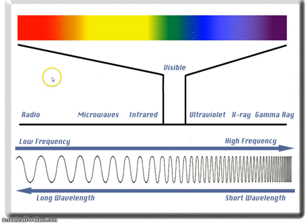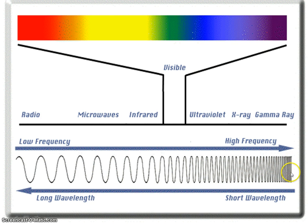Here is the electromagnetic spectrum. You can see this transverse wave at the bottom that shows us the low frequency, long wavelength electromagnetic energy is on the left side of the spectrum, and the high frequency, short wavelength electromagnetic waves are on the right side. Low frequency means low energy; high frequency means high energy. That is the way electromagnetic waves work.